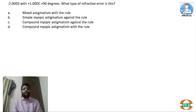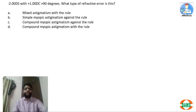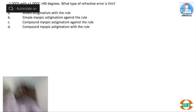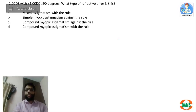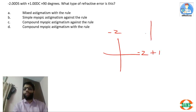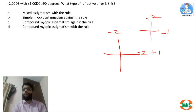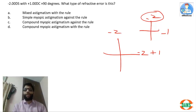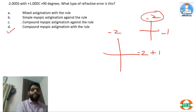Next question: minus 2.0 DS with plus 1.0 DC at 90 degrees — what type of refractive error is this? Minus 2 applies to both axes; the plus 1 cylinder at 90 degrees acts on the vertical axis, making it minus 2 and minus 1 in vertical. It is compound myopic astigmatism, and since the vertical meridian is more myopic and steeper, this is compound myopic astigmatism with-the-rule.